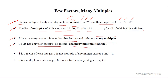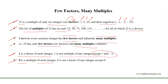We have to know that 1 is a factor of each integer, but 1 is not a multiple of any integer except 1 and minus 1. On the other hand, 0 is a multiple of each integer, but 0 is not a factor of any integer except 0 itself.